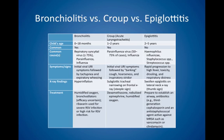Treatment: for bronchiolitis, humidified oxygen and bronchodilators, though efficacy is uncertain, and ribavirin is used for severe RSV infection or those at high risk. Treatment of croup is dexamethasone, nebulized epinephrine, and humidified oxygen. For epiglottitis, this is a very severe illness, so you need to be prepared to establish an airway. Give antibiotics such as a third-generation cephalosporin and an antistaphylococcal agent active against MRSA, such as either vancomycin or clindamycin.